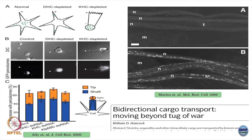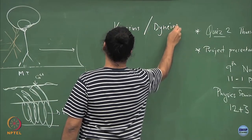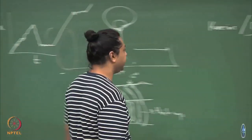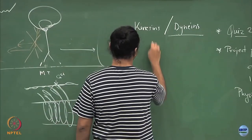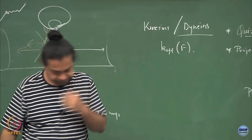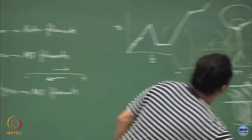Another puzzle is that dyneins are somewhat different and more complicated motors. To show that, you can try to estimate the unbinding rate of dyneins or kinesins as a function of force. Here is what sort of experiments you would do.